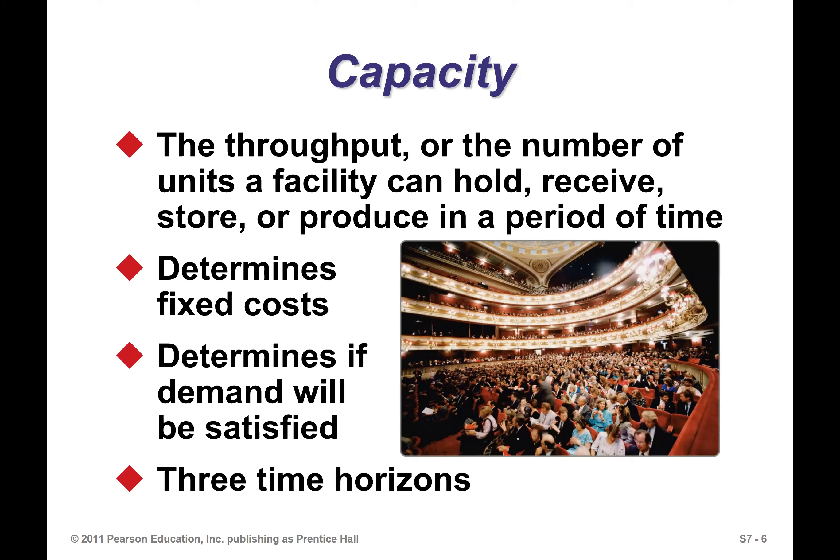Capacity is the throughput or number of units a facility can hold, receive, store, or produce in a period of time. That definition covers everything. If you're talking about manufacturing, you're producing. If you're talking about the capacity of a building, it's what you can store, receive, or hold. If you're talking about a machine, you can talk about the throughput — the number of units it can produce.